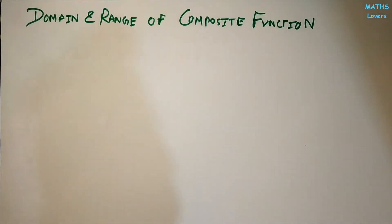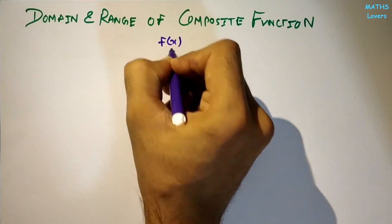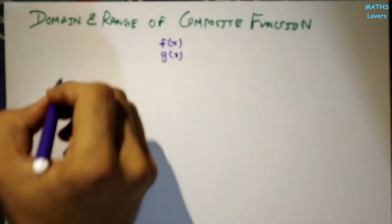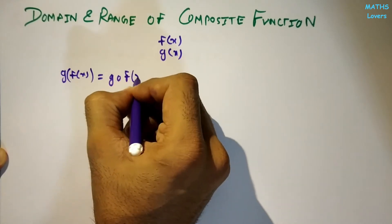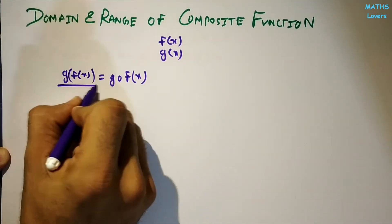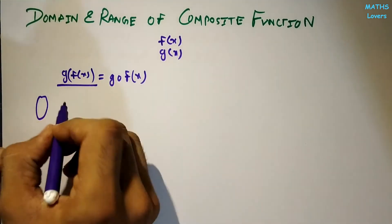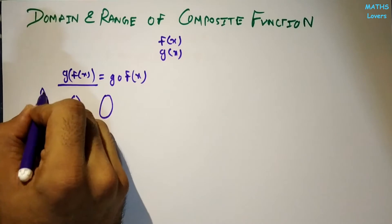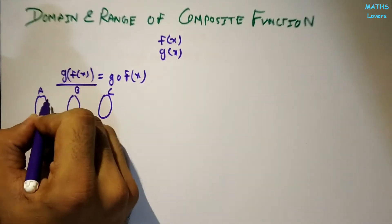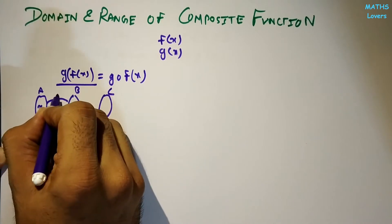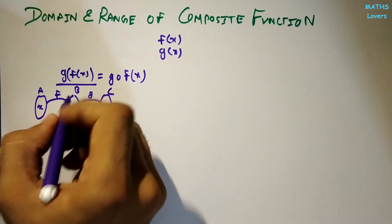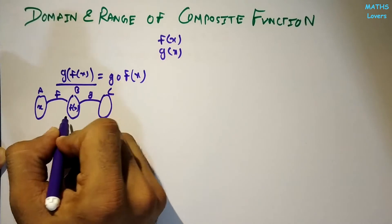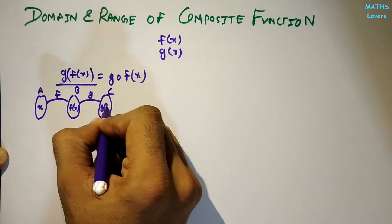In this part we will learn how to find the domain and range of a composite function. Suppose there are two functions f(x) and g(x) and we need to find the domain of g∘f. Using a diagram with sets A, B, and C: we put x into f, it becomes f(x), and when we put f(x) into g, it becomes g(f(x)). This is our composite function.